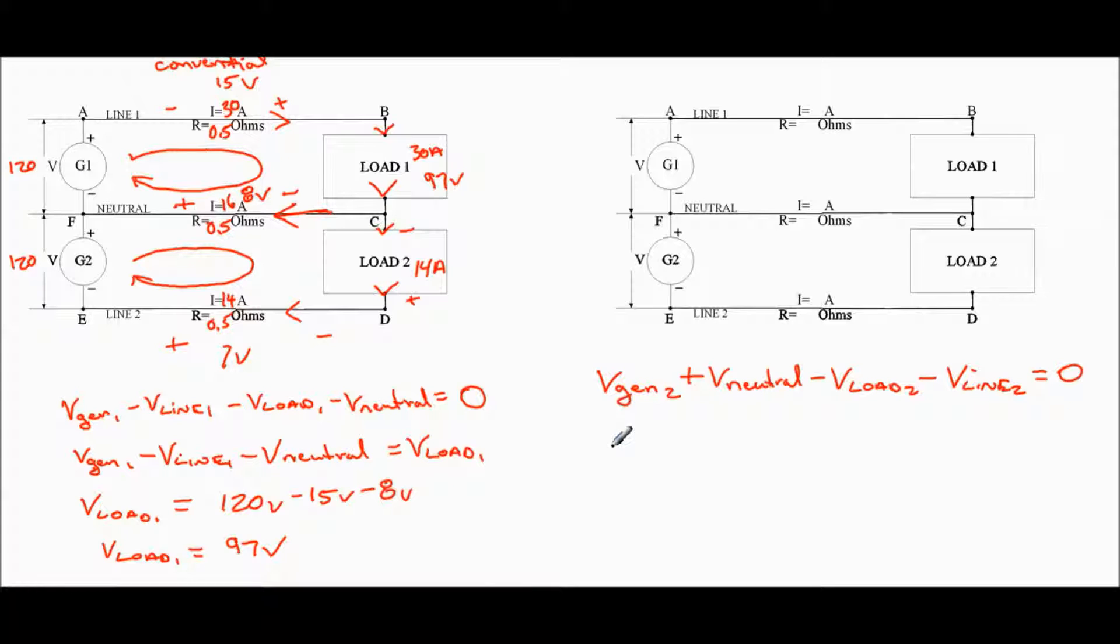All right. So we're looking for V load 2. So V, well, we'll keep it in order. So V gen 2 plus V neutral minus V line 2 equals V load 2. So we put that over here by putting positive V load 2 on this side and positive V load 2 on that side and canceling them out.